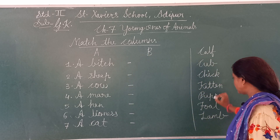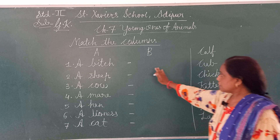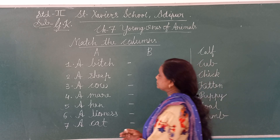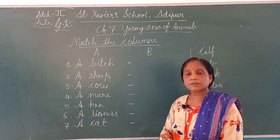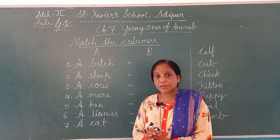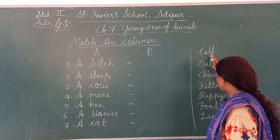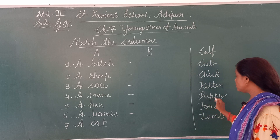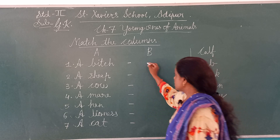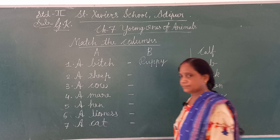So here you can see — यहाँ पे जैसा textbook में लिखा हुआ है, वैसा ही मैंने यहाँ लिखा है। First one: A — बिच। बिच के बच्चे को क्या बोलेंगे? पपी बोलेंगे ना? तो यहाँ पे you have to write P-U-P-P-Y. In the first blank, बिच के सामने आपको लिखना है — Puppy. I am also writing here, you also start writing.